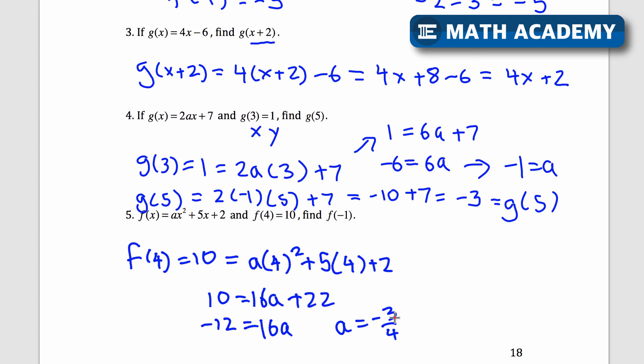I know a, and now I need to find f of negative 1. So in place of a, I'll put negative 3 fourths. f of negative 1 equals a, that's negative 3 over 4, times, I'm putting in negative 1 for x, negative 1 squared plus 5 times negative 1. Plus 2 right there.